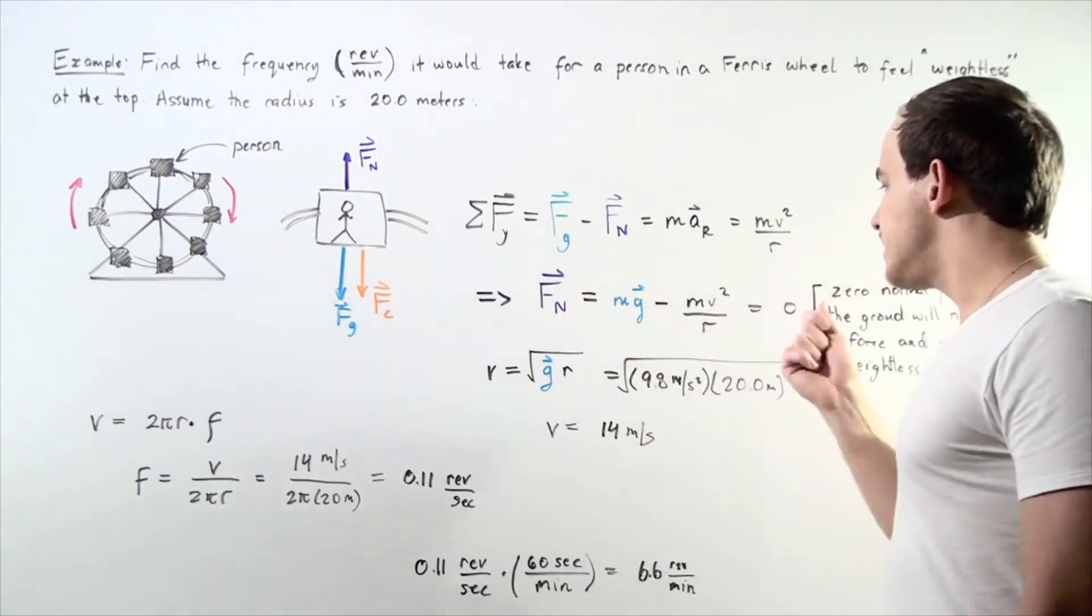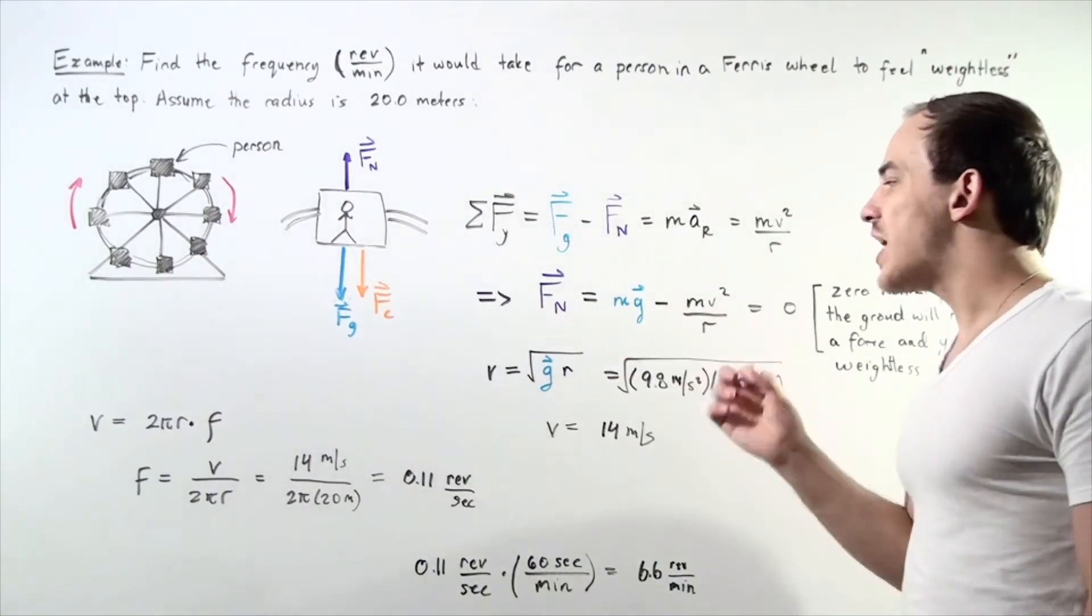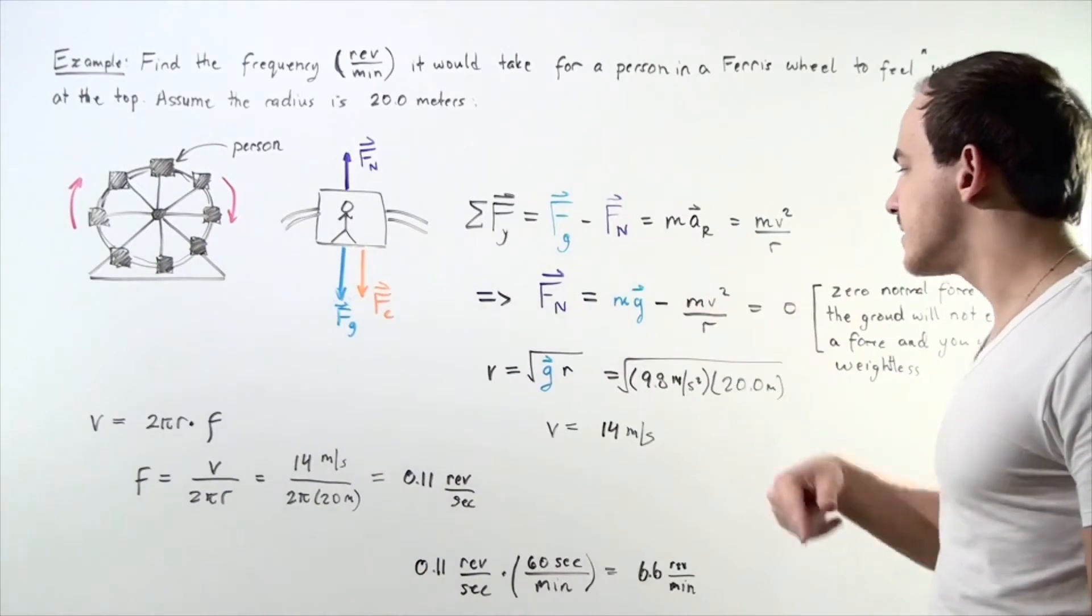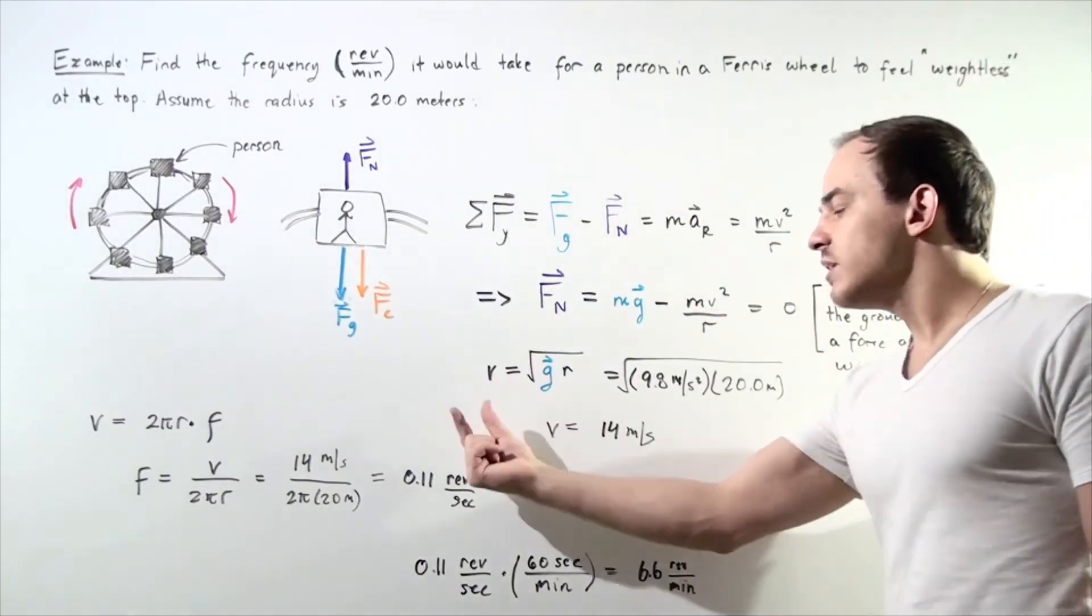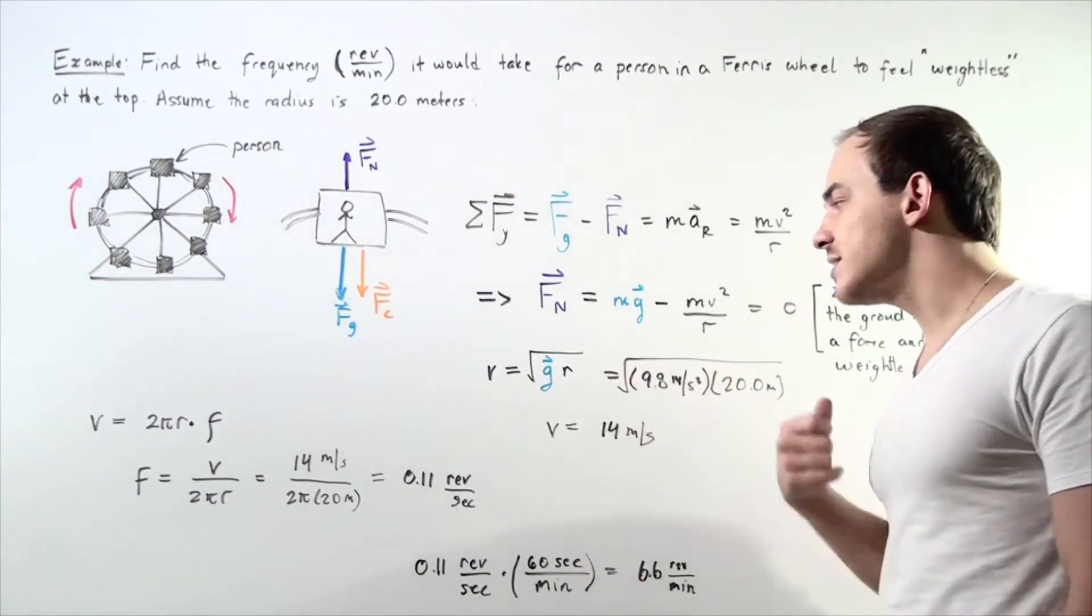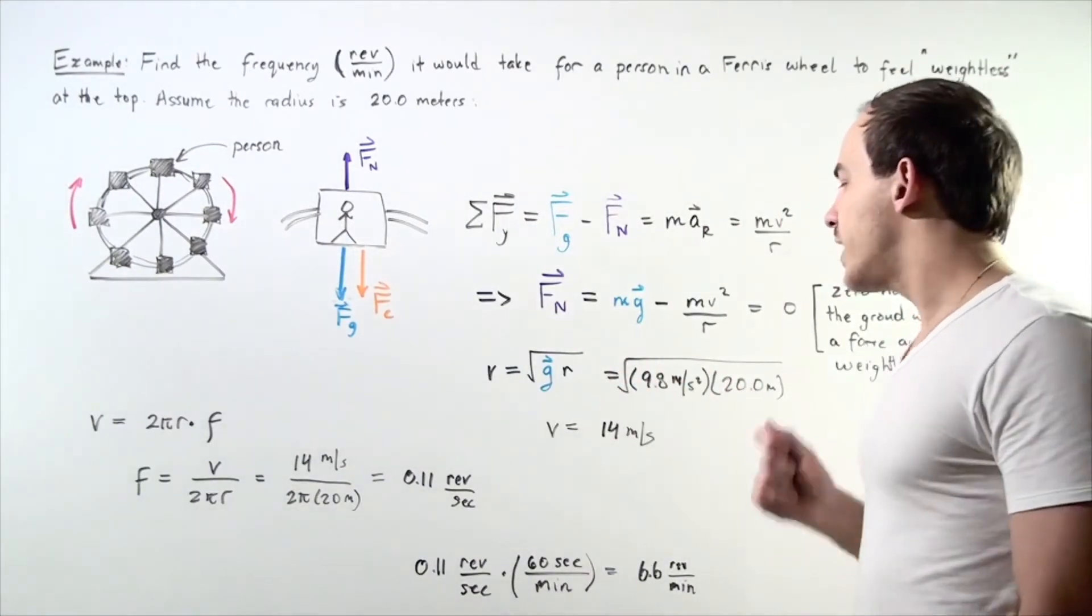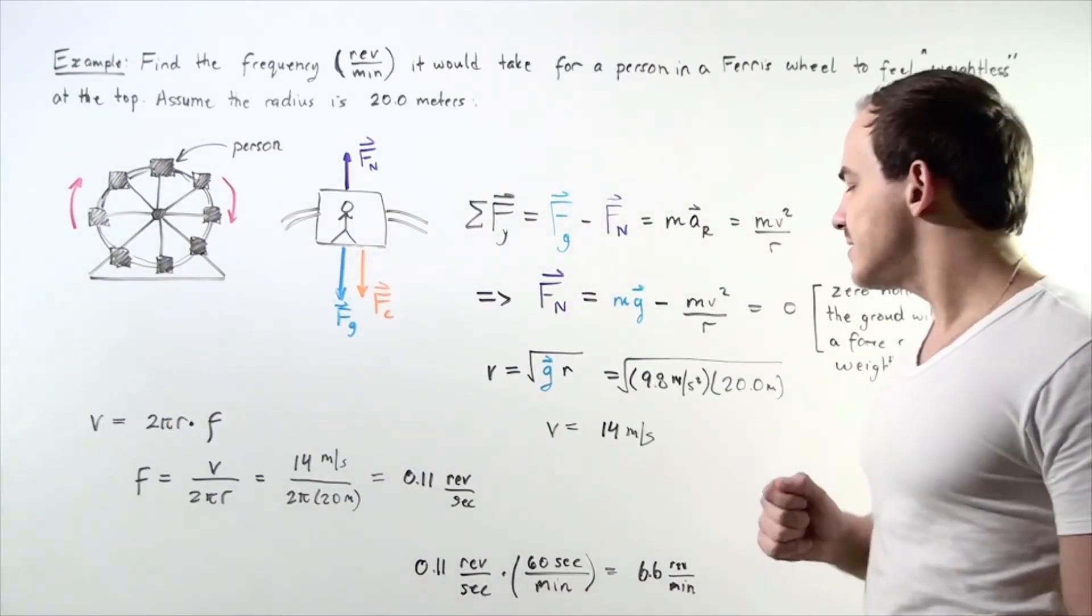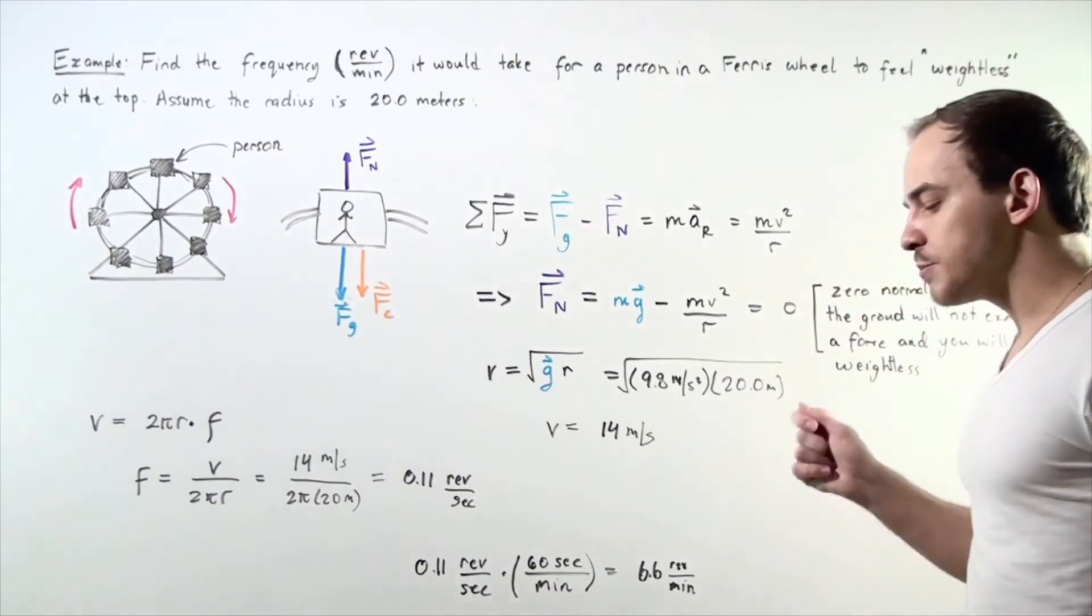We set this equal to zero and rearrange and solve for the velocity. Notice the mass is canceled and we're left with the velocity equal to the square root of our gravitational constant g multiplied by our radius r. We plug in our values and find the velocity of 14 meters per second.